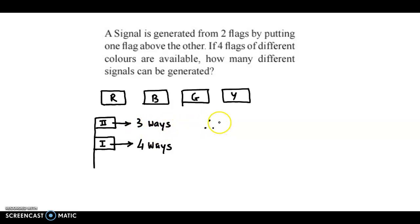Therefore, we could say the total ways of forming the signal or generating the signal would be four into three. Now here we have applied the fundamental principle of multiplication because fixing both the flags is compulsory to generate a signal. So the total ways would be four times three and that is equal to twelve.